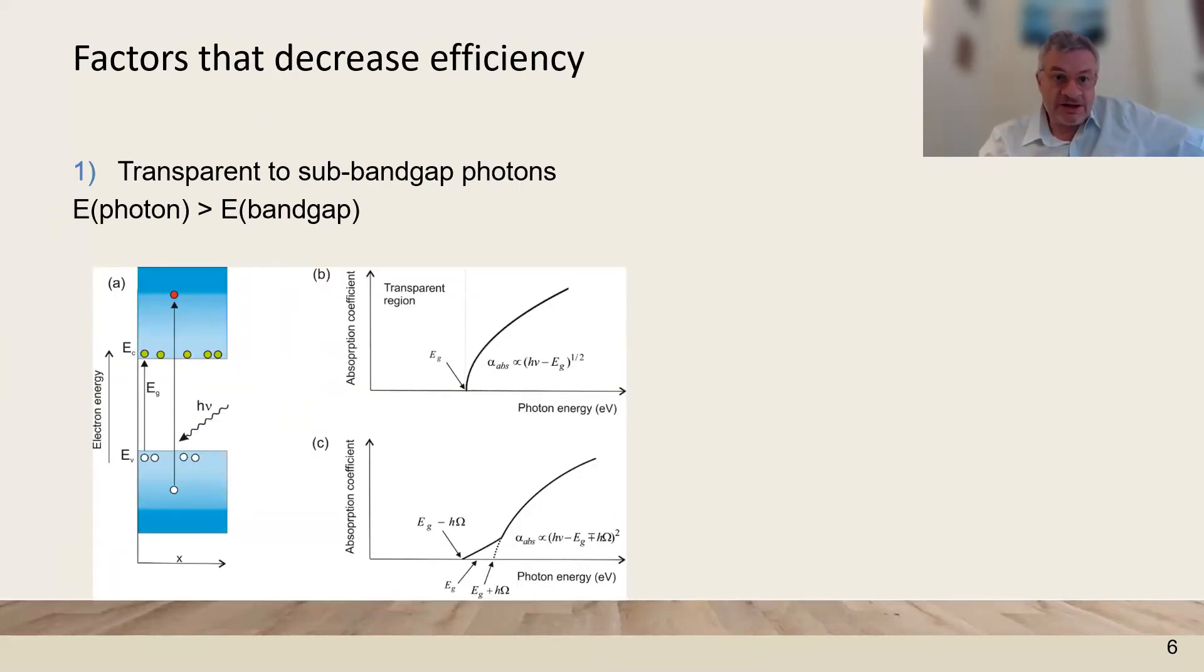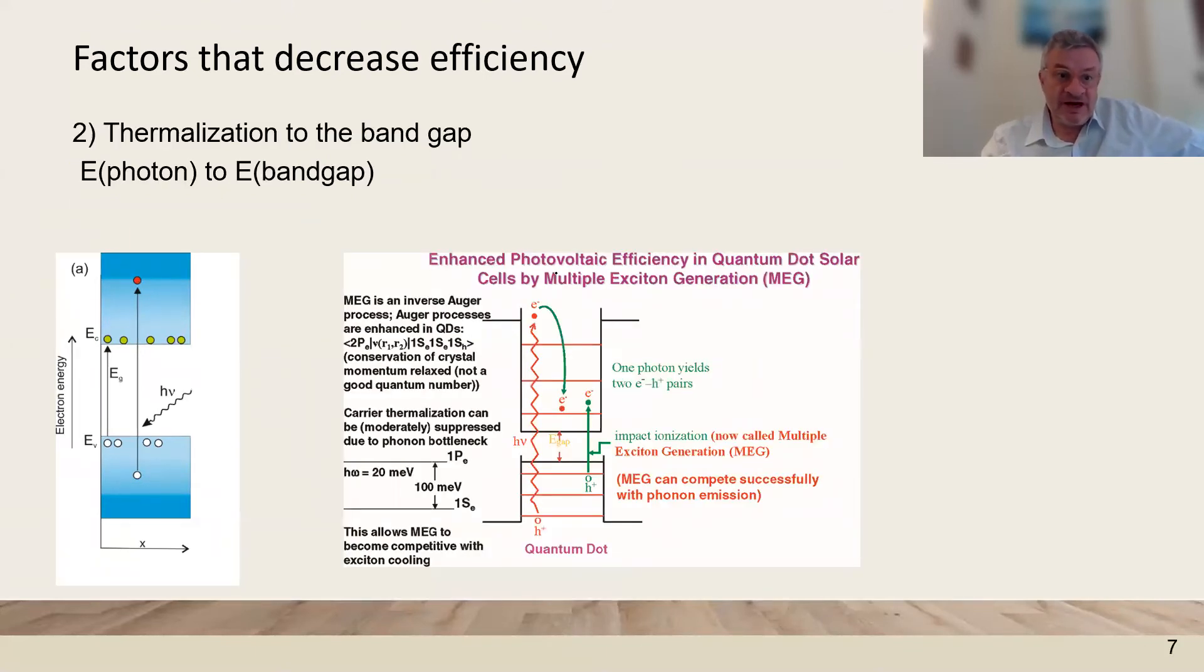The main factors that decrease efficiency: at the transparent region, you lose a lot of photons that are not absorbed. And the thermalization: photons with a large energy become thermalized to the band gap, so all the excess energy of the photon is lost. Unless you use schemes of multiple exciton generation that can generate more than one electron hole per photon. But this is not the case normally, so all the photons give the energy of the band gap.